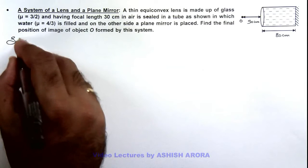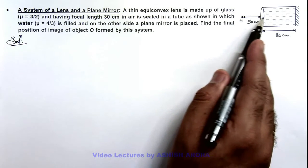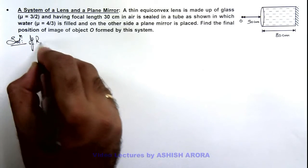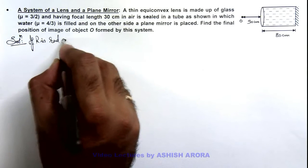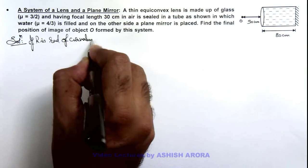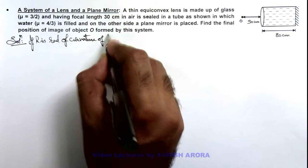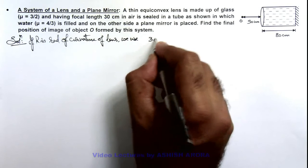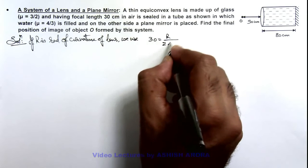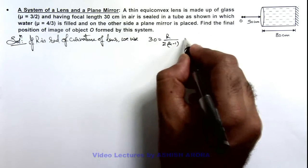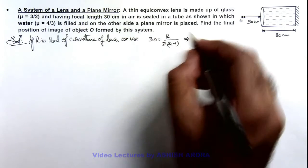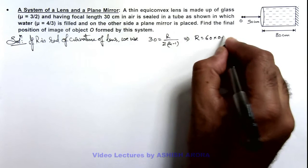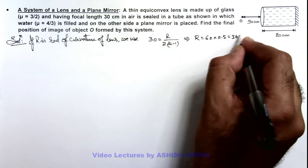In this situation, first we calculate the radius of curvature of this lens. We can write: the focal length is 30, which is equal to R divided by twice of (μ − 1). On substituting the value of μ as 3/2, we get R = 60 × 0.5, which is equal to 30 centimeter.